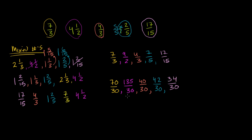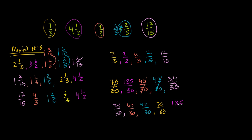Now all denominators are the same, so we just compare numerators. The smallest is 34 (which is 34/30), then 40/30, then 42/30, then 70/30, and the largest is 135/30. Converting back to their original representations gives the exact same ordering as Method 1.